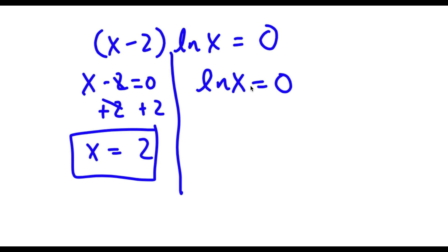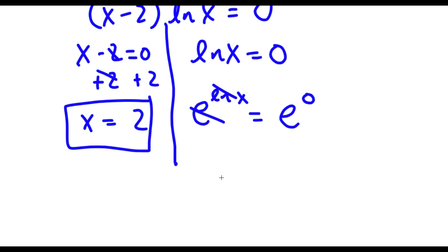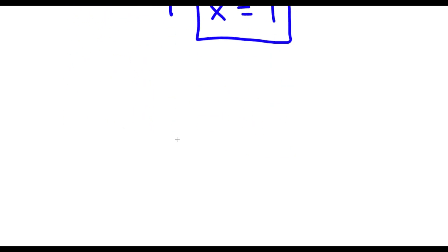For ln x equals 0, I raise e to the power of both sides: e to the power of ln x equals e to the power of 0. The e and ln cancel out, so I'm left with x equals e to the power of 0, which is 1. So my two solutions are x equals 2 and x equals 1.